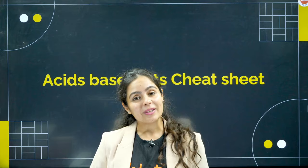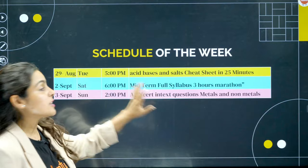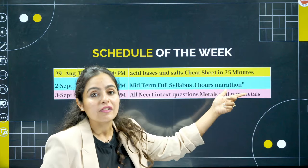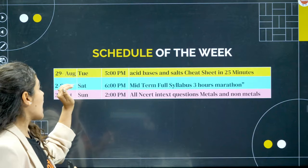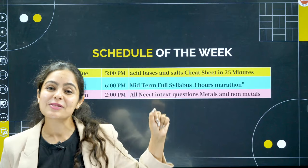From today's session, you will get help for other subjects as well. But before we move on, let me show you the schedule of the week. If you do not want to miss the midterm syllabus, there will be a marathon for 3 hours. The entire syllabus will be completed in 3 hours, happening on 2nd of September, Saturday at 6 pm. For 3 hours you will be able to complete your chemistry syllabus.